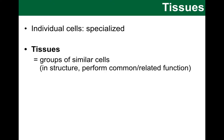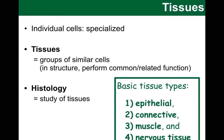The field that studies tissues is known as histology, and this is important. To make life easier, we commonly categorize tissues into one of four major tissue types: epithelial, connective, muscle, and nervous tissues. We will go through each of these, although only briefly, as a revision.